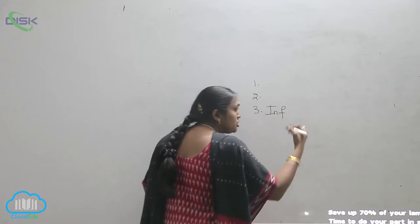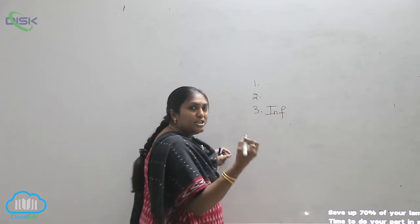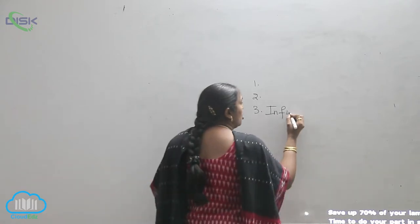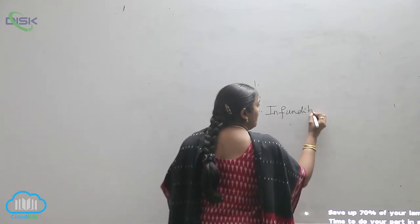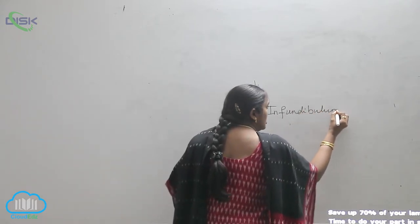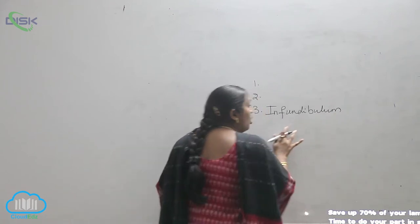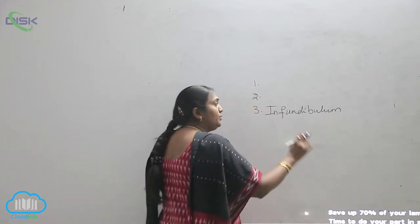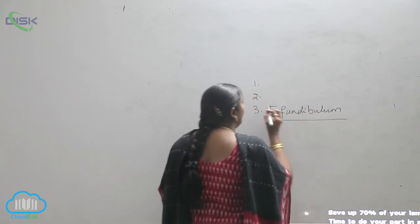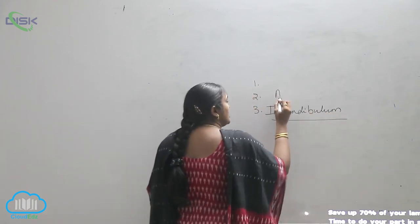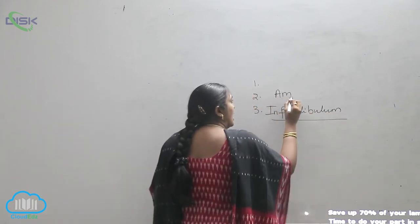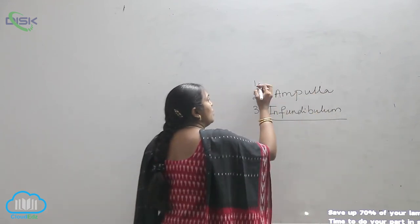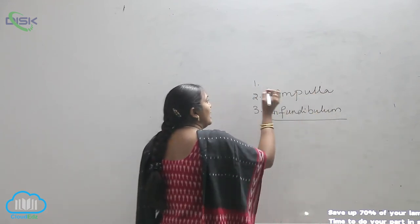The innermost region of the fallopian tube which is closer to the ovary is called the infundibulum. The second region is the ampulla, and the first one we call it as the...